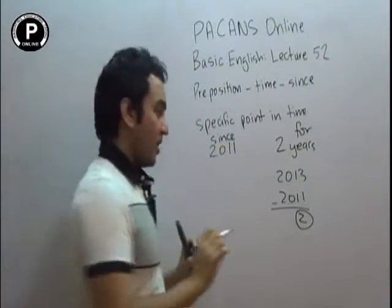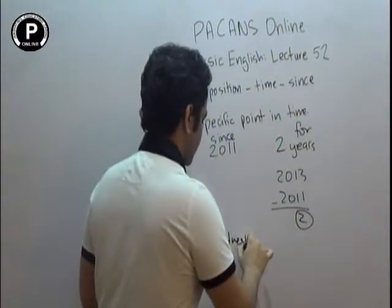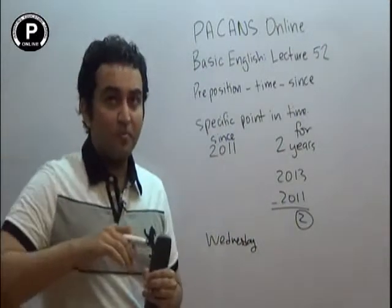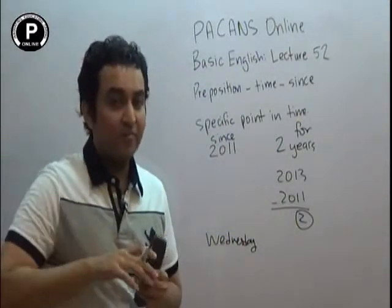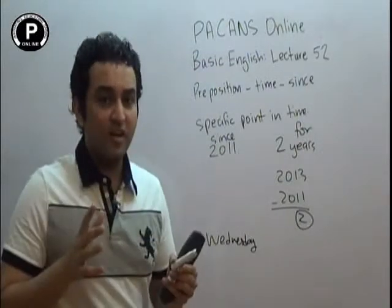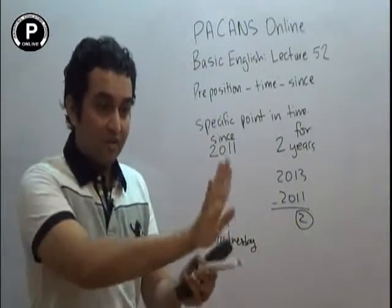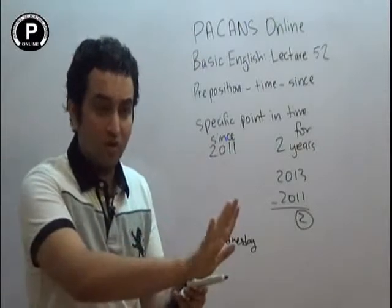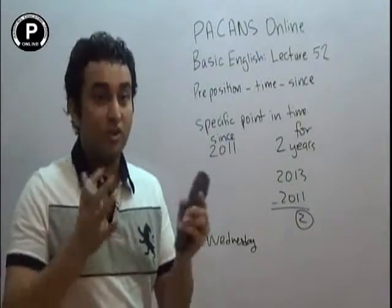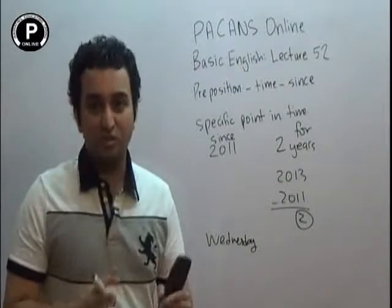अब यह सोचें कि आप इस academy में Wednesday से आ रहे हैं। आज Friday है। अगर आपने 'for' में इसको use करना है तो आप कहेंगे: 'I have been coming for the last two days।' मगर Wednesday को calculate करने के लिए आपने सिर्फ एक specific point in time — एक दिन — बता दिया: 'since Wednesday।' इसमें कोई calculation नहीं होरी — जब दो dates involved नहीं हैं तो हम 'since' को use करेंगे।